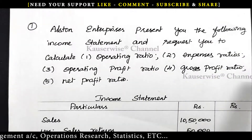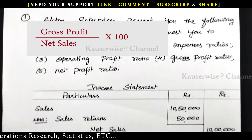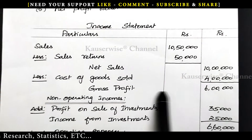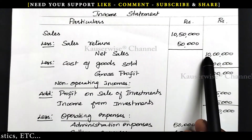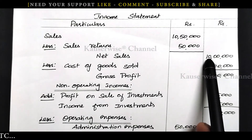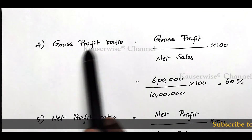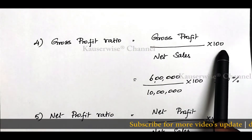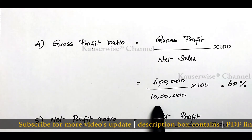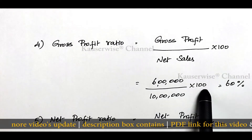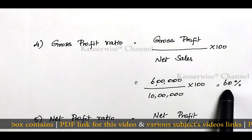The formula for gross profit ratio is gross profit divided by net sales into 100. Gross profit is 6 lakhs, net sales is 10 lakhs, so 6 lakhs divided by 10 lakhs into 100 equals 60 percentage. GP ratio is 60 percentage.